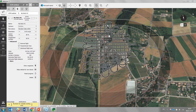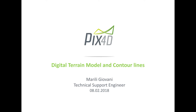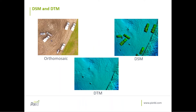Thank you very much Andrea. What we will talk about today is digital terrain models and contour lines in Pix4D software. I want to highlight the difference between a digital surface model — a DSM — and a digital terrain model, or DTM. On the DSM the elevation is color-encoded and whatever appears in your images and point cloud will also be visible. On the other hand, for the DTM only the points that belong to the terrain layer are visible — for example, cars are not included in the DTM.